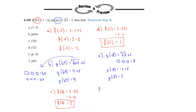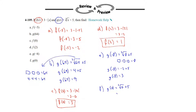The last one, f, is g of 0. So g of 0 equals the cube root of 0 plus 5. The cube root of 0 is 0, so 0 plus 5 is 5, and g of 0 is equal to 5. That's how you evaluate functions.